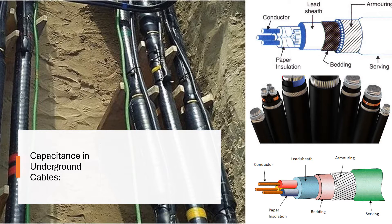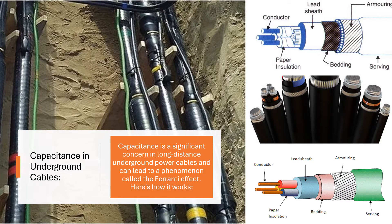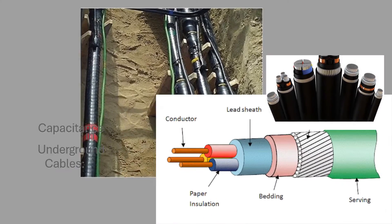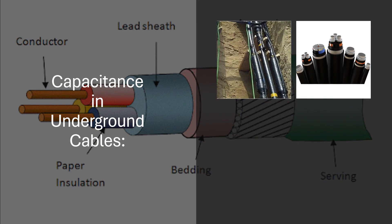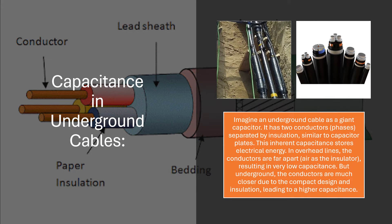Capacitance in underground cables. Capacitance is a significant concern in long-distance underground power cables and can lead to a phenomenon called the Ferranti effect. Imagine an underground cable as a giant capacitor. It has two conductors — phases — separated by insulation, similar to capacitor plates. This inherent capacitance stores electrical energy.